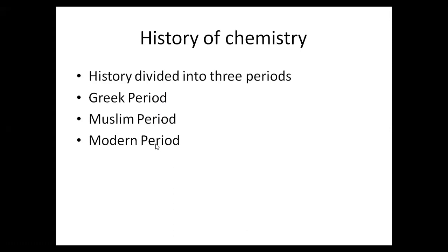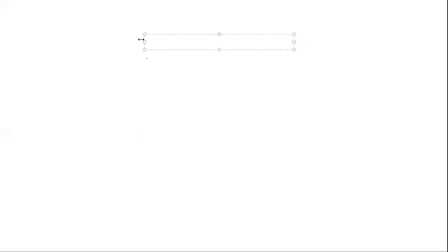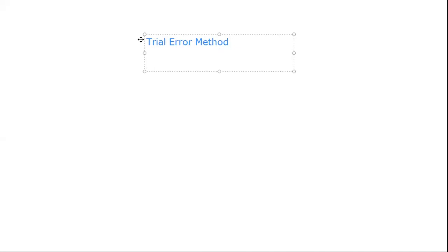Today we will discuss about the modern period. But before that, we will discuss two methods. The first method is the trial-and-error method. In the trial-and-error method, the Greek philosophers or Muslim scientists knew the input.